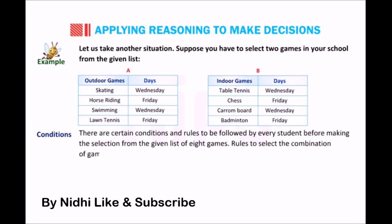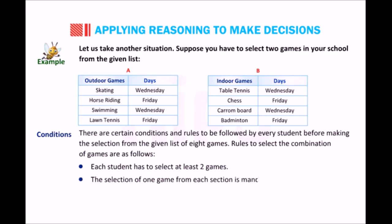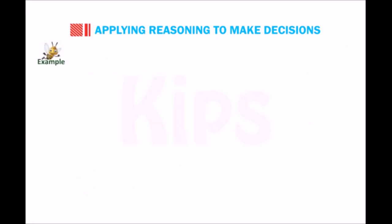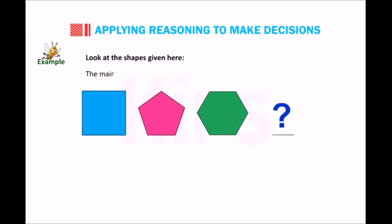Rules to select the combination of games are as follows: each student has to select at least two games. The selection of one game from each section is mandatory. The periods for the two selected games should not fall on the same day.